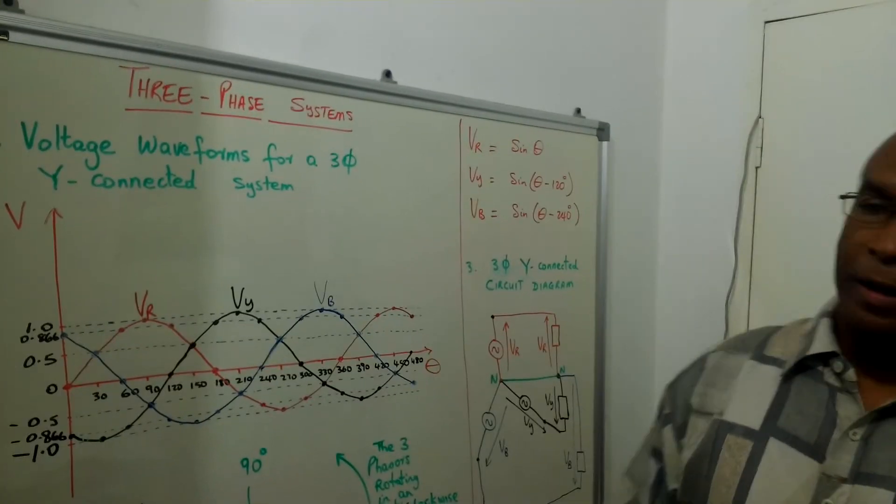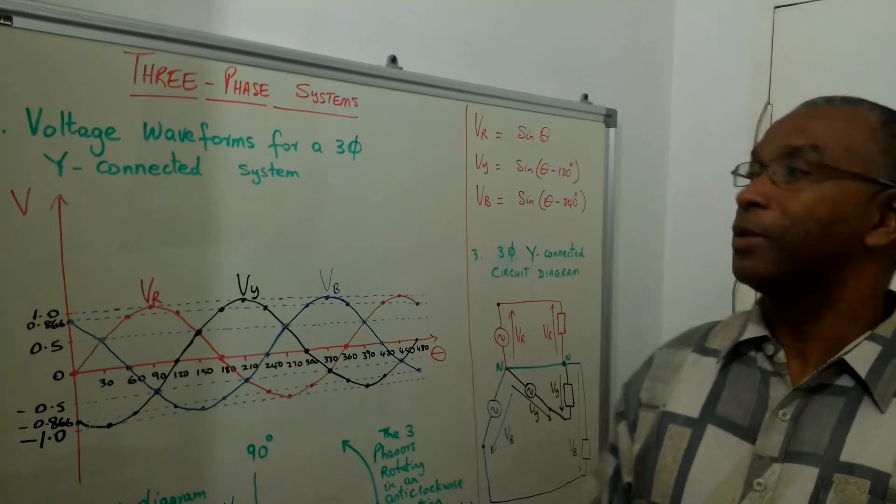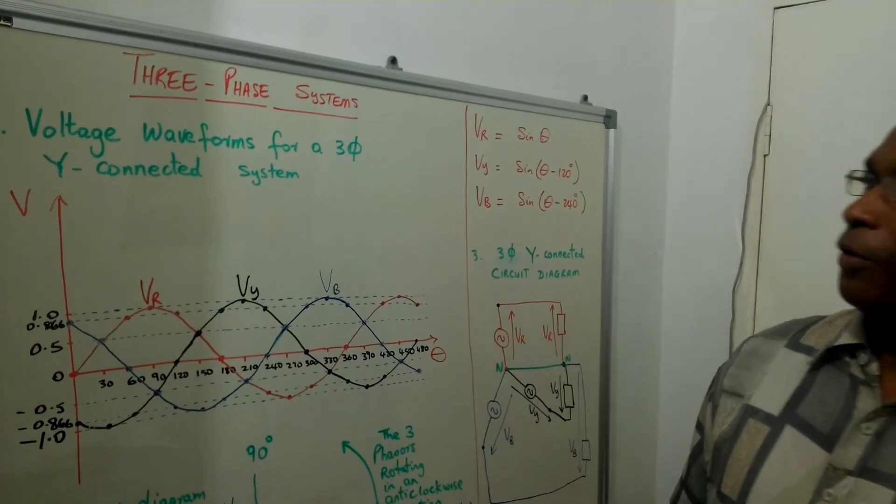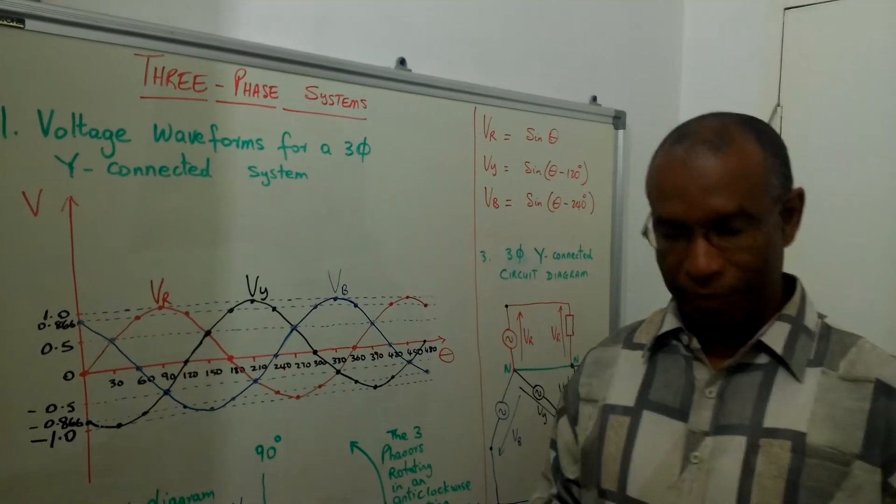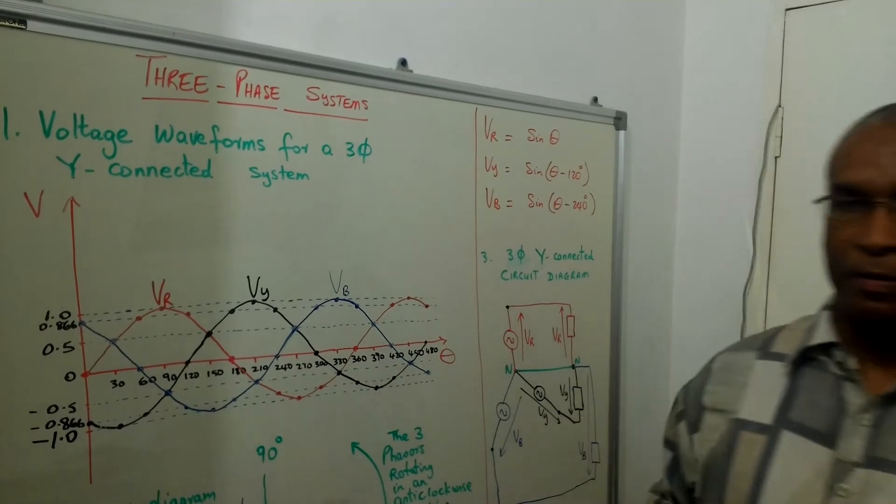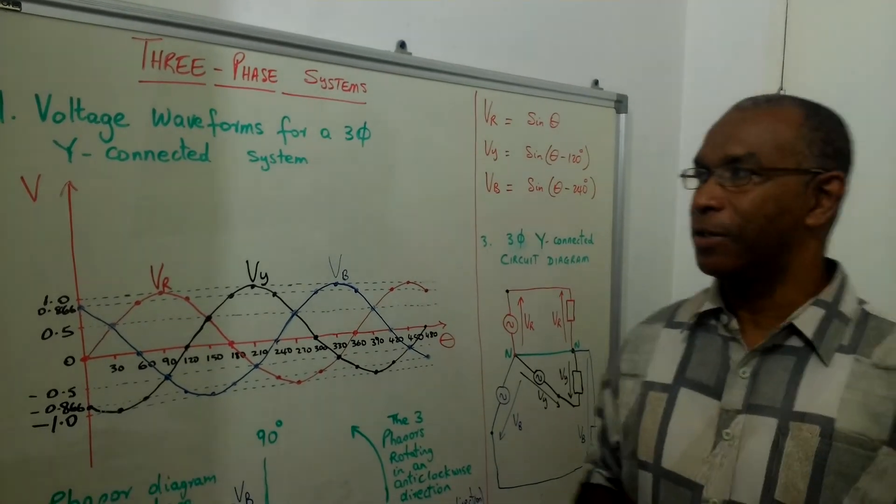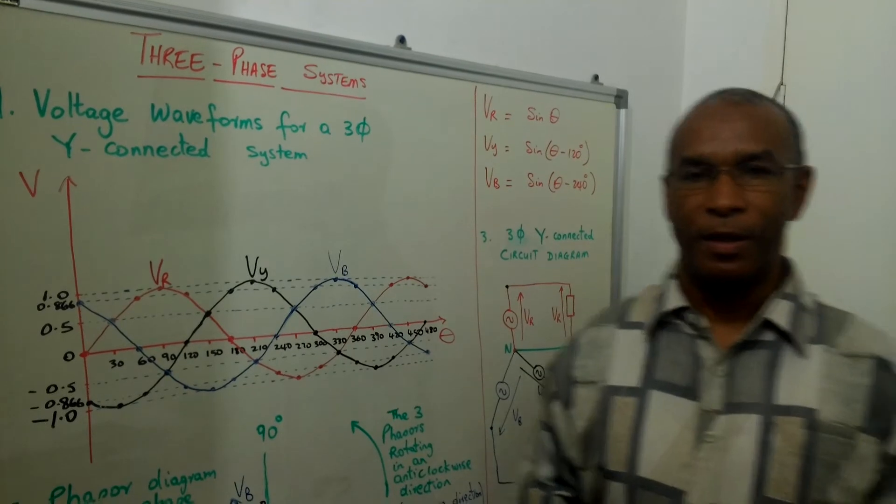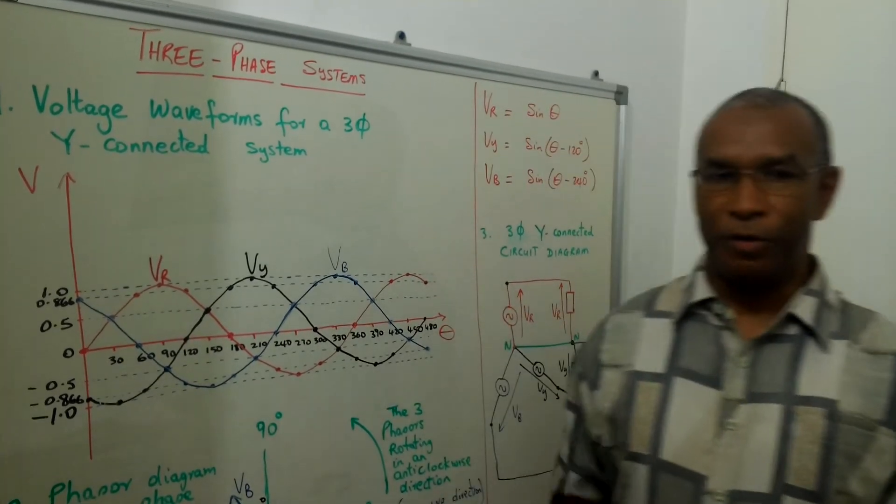At the generation and transmission levels, these are three phase systems. So you have generators, three phase, three phase motors, transmission lines, transformers, all are three phase systems.